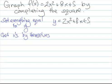So I'm going to get these x's here by themselves. So I'll subtract 5 from both sides. And that gets me y minus 5 equals 2x squared plus 8x.